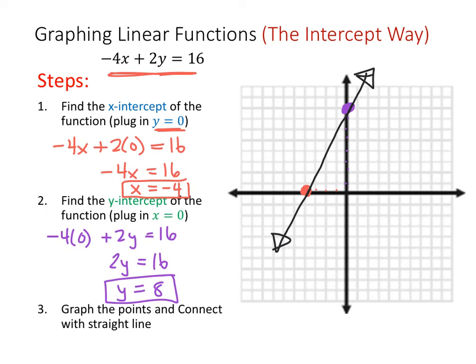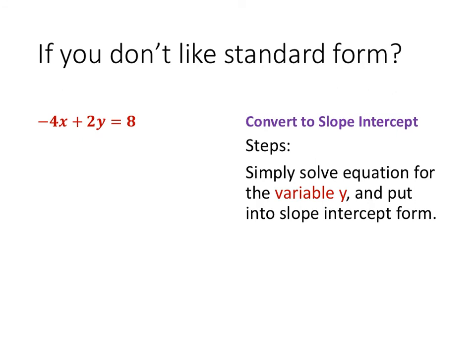That's how we graph using intercepts — understanding the basic principle of plugging in y equals 0 or x equals 0 to find the other intercept. If we're finding the x-intercept, we make y equal 0 because we're solving for x. If we want to find the y-intercept, we plug in x equals 0, and we're solving for y. Finally, if we don't like using standard form, we can convert to slope-intercept form to easily identify the slope and everything else, by simply solving for y.